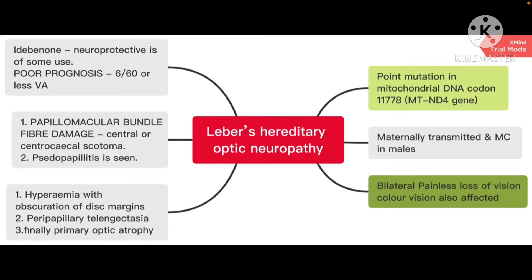There is bilateral, almost severe, painless loss of vision, and color vision is also affected. When you look at the optic disc, initially there is hyperemia with obscuration of the disc margin, and later there is peripapillary telangiectasia involving the peripapillary retina and the optic disc.